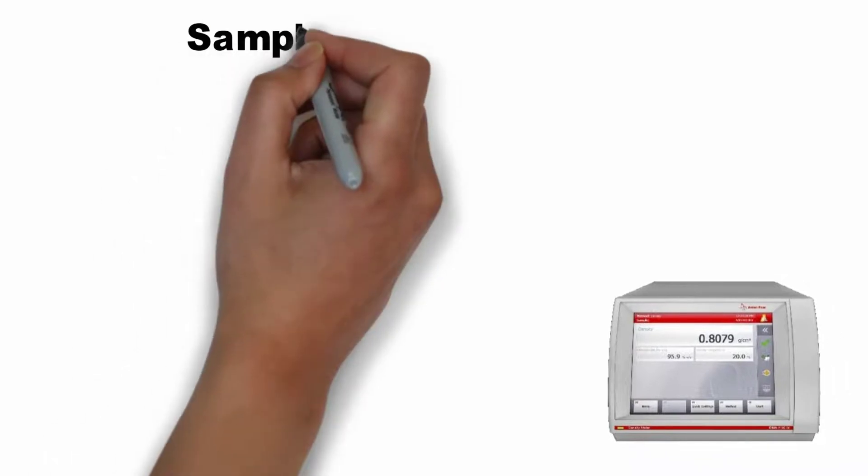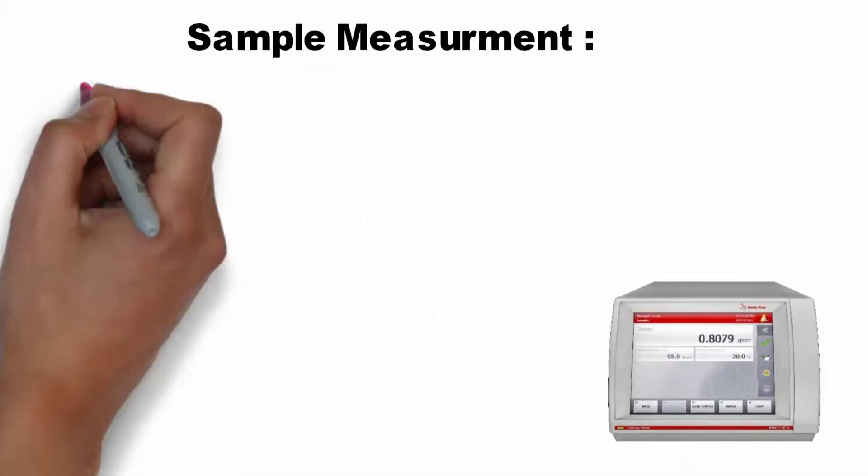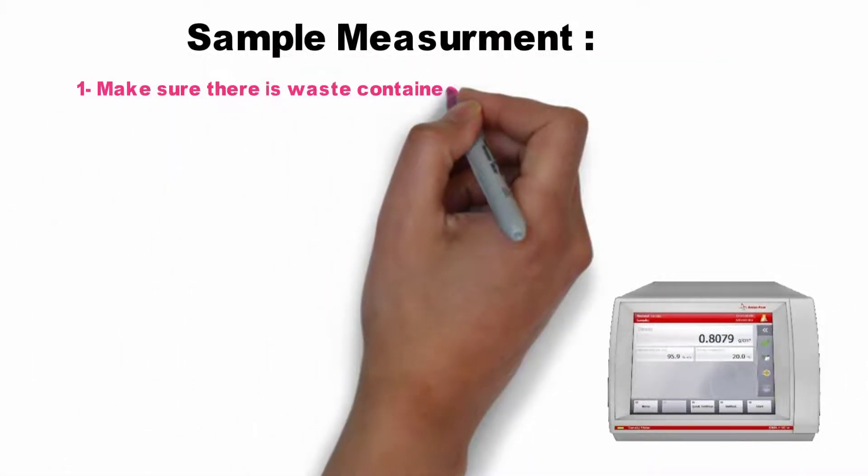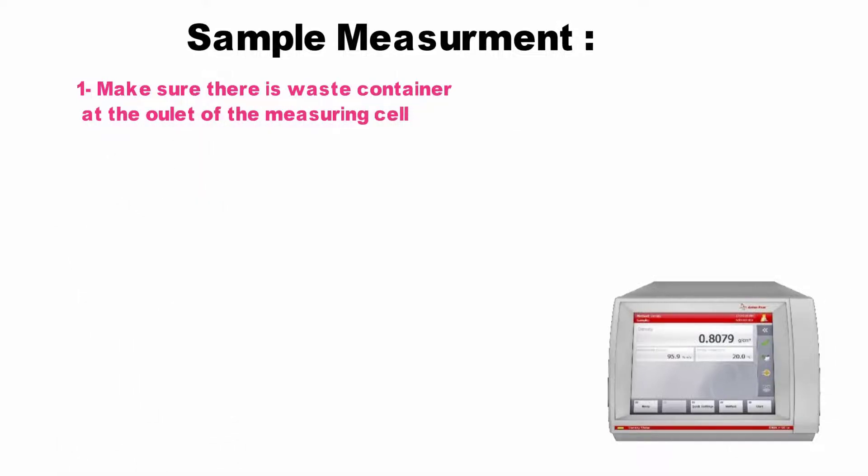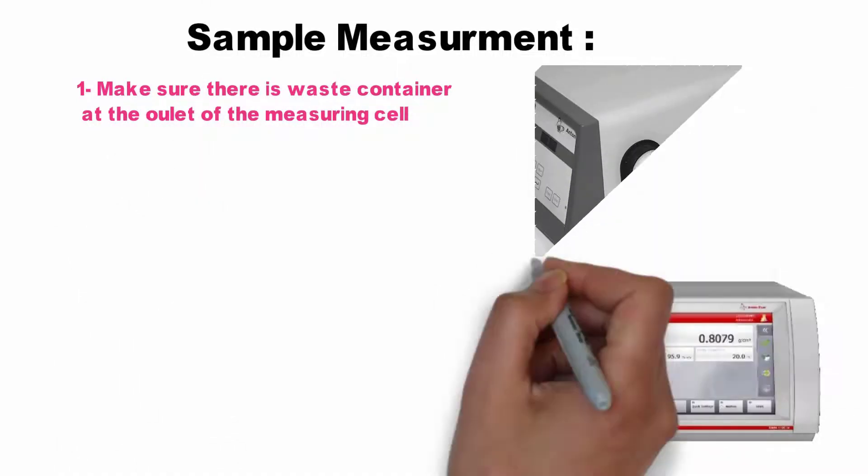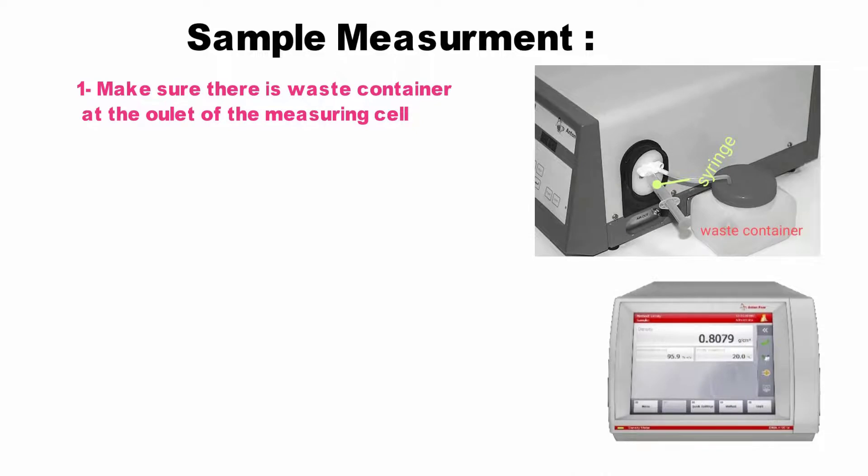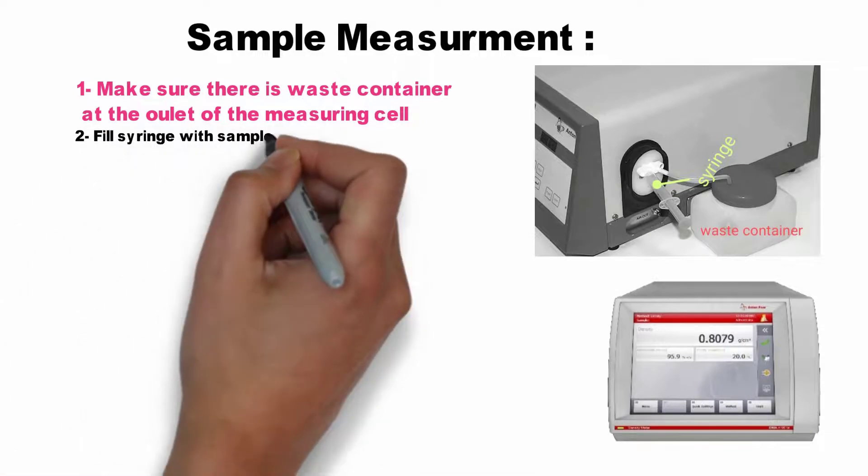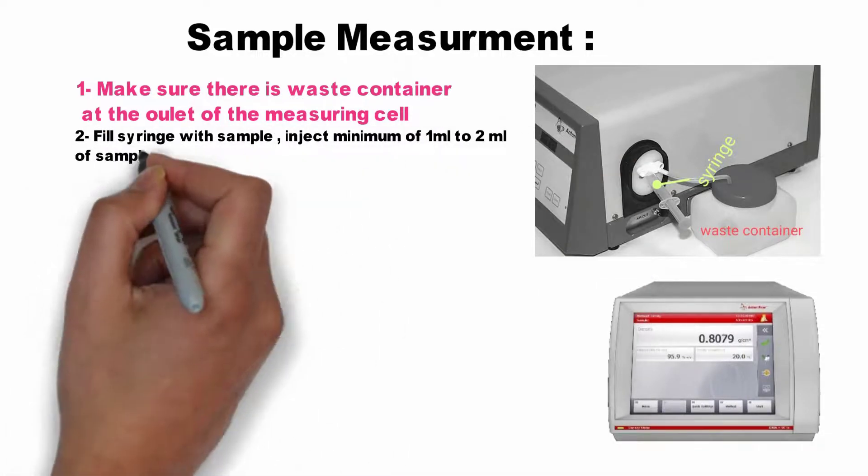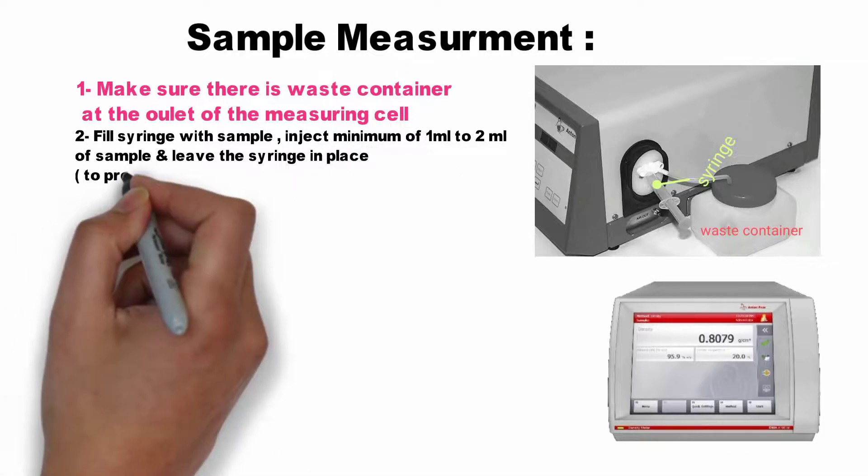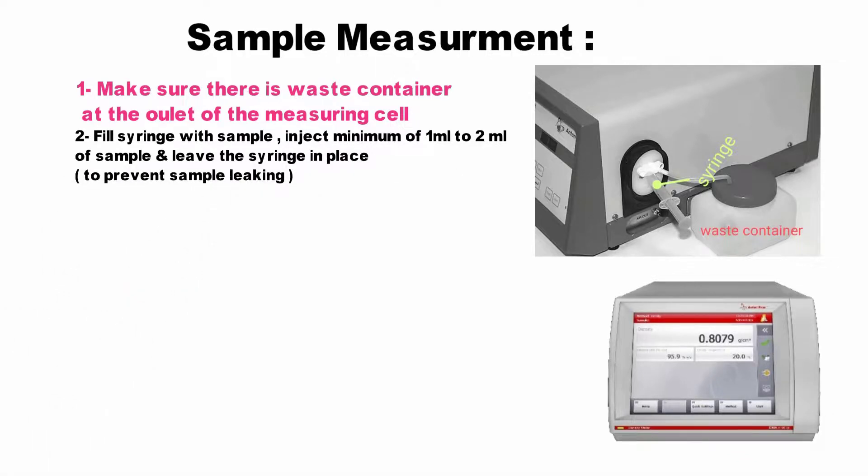Density measurement by digital analyzer: for the sample measurement, make sure there is a waste container at the outlet of the measuring cell. Fill a syringe with sample, inject minimum of 1 ml to 2 ml of sample, and leave the syringe in place to prevent sample leaking. Ensure the U-tube is properly filled and no bubbles.